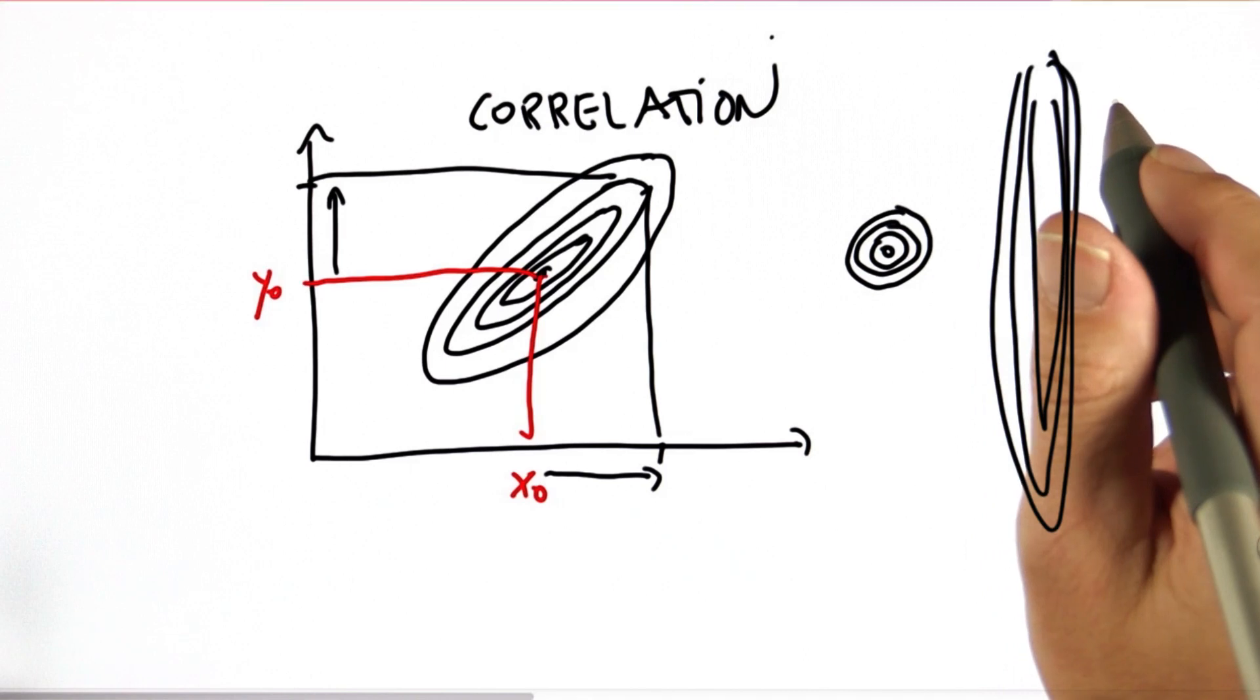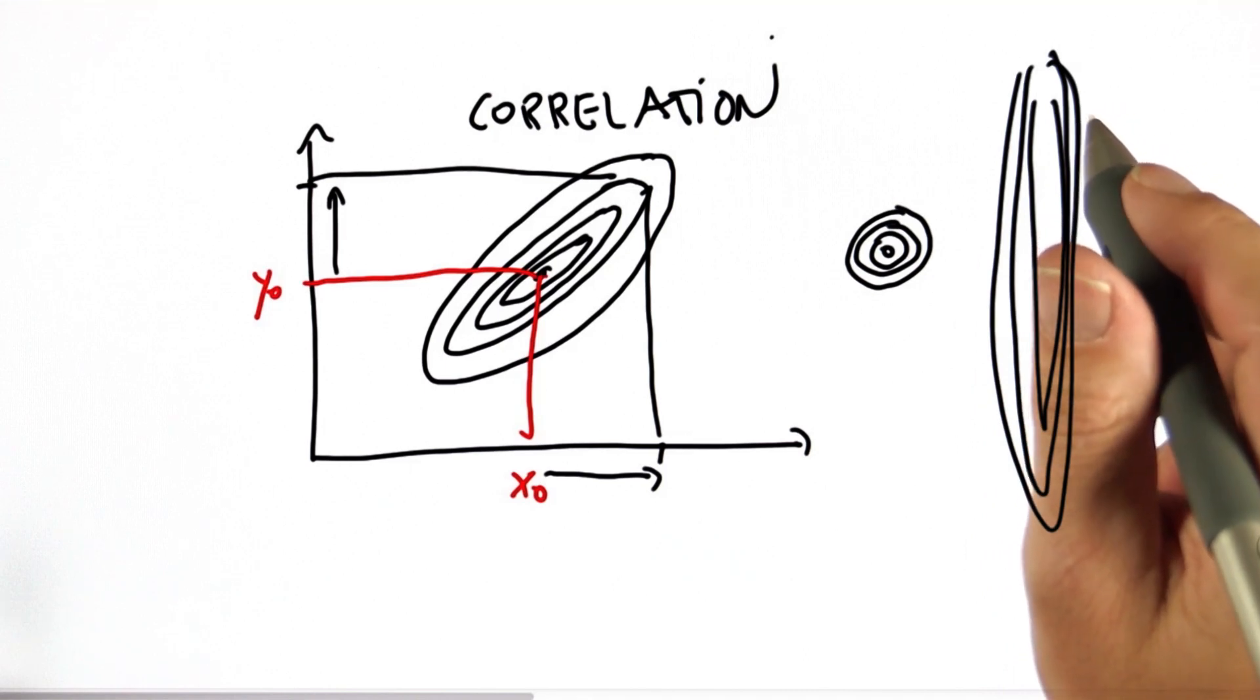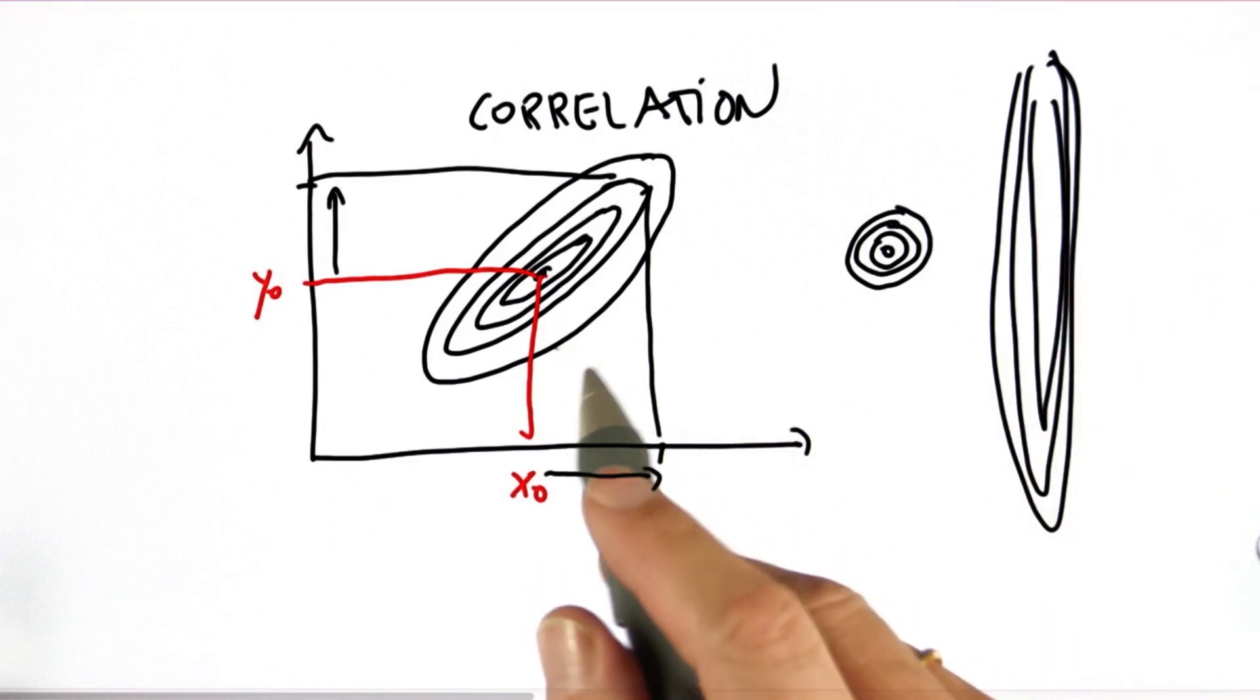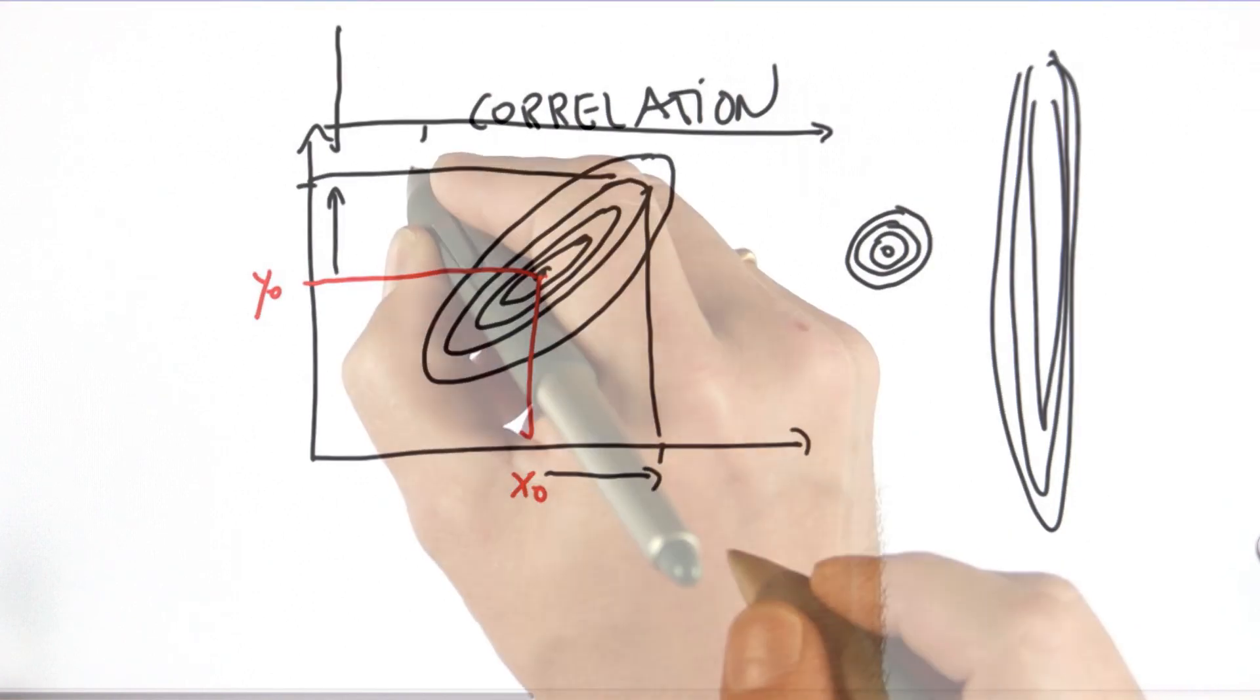I can explain to you the entire effect of estimating velocity and using it in filtering using Gaussians like these, and it becomes really simple.